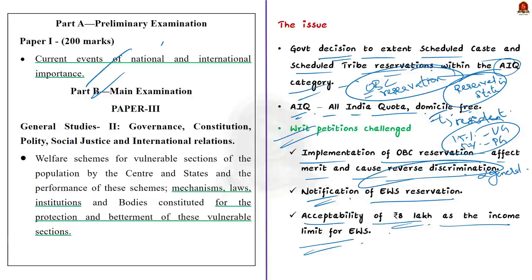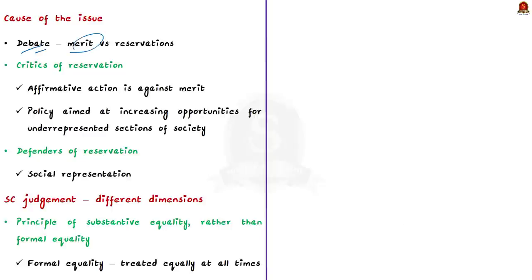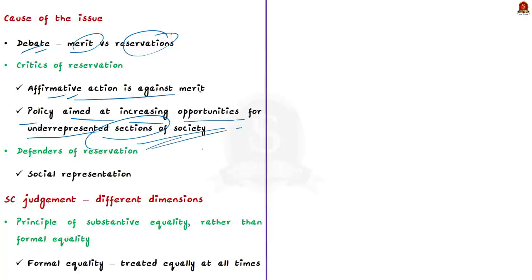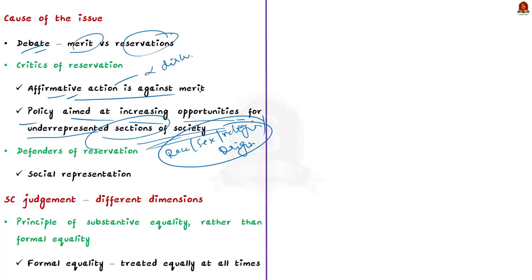We should understand why this issue arises in India. There has always been a debate about reservations because a section of people believe affirmative action is against merit. Affirmative action refers to a policy aimed at increasing workspace or educational opportunities for underrepresented sections of society, commonly implemented by governments taking race, sex, religion, or national origin into account. Critics say reservations are against merit, but others argue that even if they affect merit, they serve other purposes such as social representation.